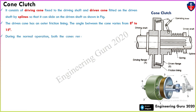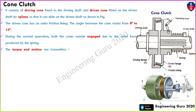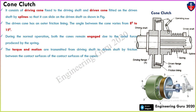During normal operation, both cones remain engaged due to the axial force produced by the spring. In this image we can see the normal engaged condition — with the help of the spring it remains engaged. The torque and motion are transmitted from the driving shaft to the driven shaft by friction between the contact surfaces of the cone.